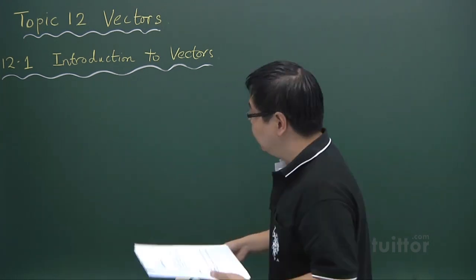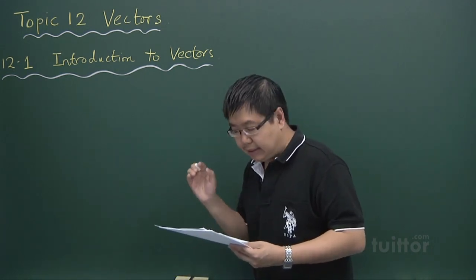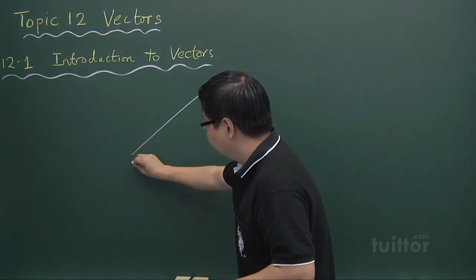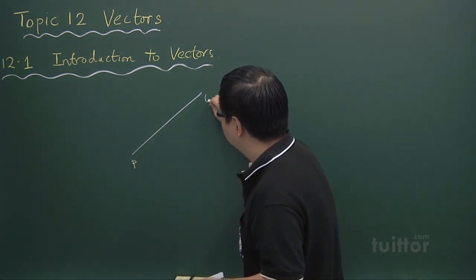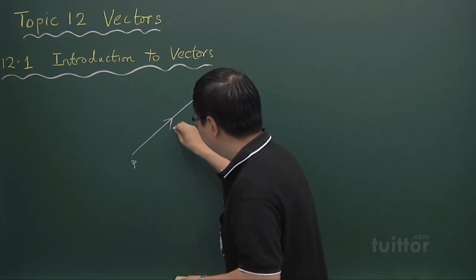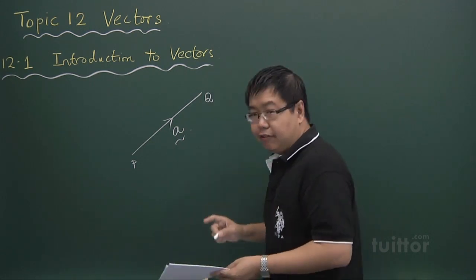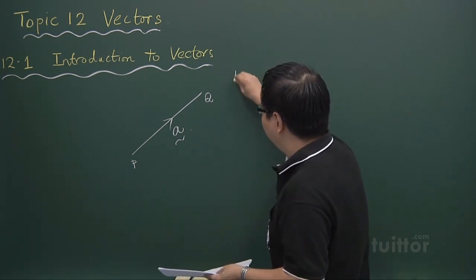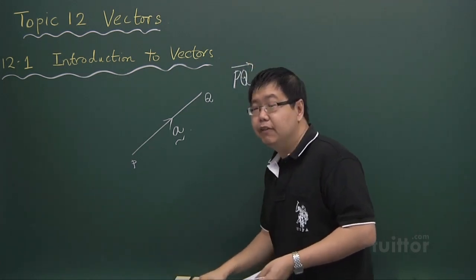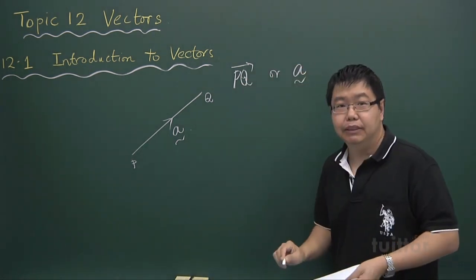In vectors, a vector is a quantity which has magnitude as well as direction. If you want to draw a vector, it goes from a particular point P to another point Q, and the vector is directed from P to Q, given by vector A. We write it either as PQ with an arrow above, or as vector A with a curly sign below.